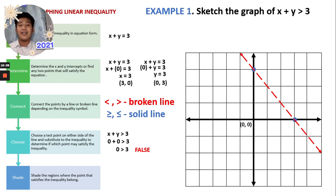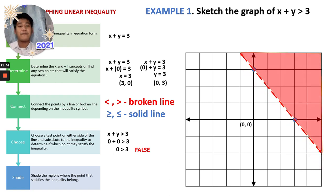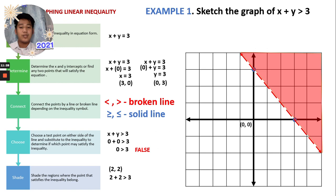By choosing the test point — I always prefer the origin because it is easy to substitute — if you use (1, 1) instead: 1 + 1 = 2, and 2 > 3 is still false. So we shade the upper part of the line. All those points lying on that shaded region are solutions to the inequality. To check: the point (2, 2) lying on the shaded region gives 4 > 3, which is true. That is how easy it is to sketch the graph of a linear inequality — just follow the 5 steps.